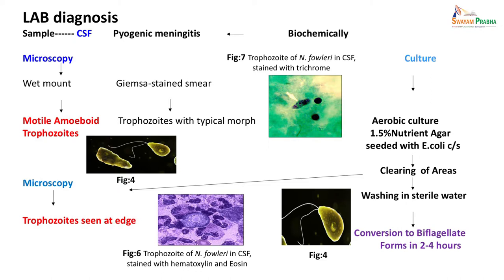Biochemically, the CSF protein, sugar, and cell picture would be similar to bacterial meningitis, but the trophozoites can be seen either directly or with trichrome staining or other stains applied to smears from the CSF. Culture can also be done by growing in aerobic culture. A 1.5 percent non-nutrient agar plate is seeded with E. coli culture, and if the sample contains the organism, the next day you will see clearing of areas where it has eaten away the E. coli colonies. Microscopy of these cleared areas will reveal trophozoites, and washing with sterile water can demonstrate conversion to biflagellate forms, which is definitively diagnostic.